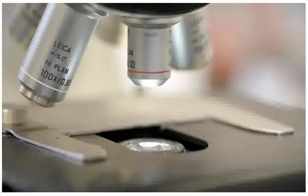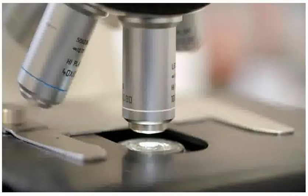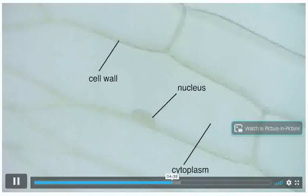To see more clearly, the magnification is increased by selecting another objective lens. The stage should be moved down before changing the lens. Can you identify the structures? It is possible to see the nucleus, cell wall and the cytoplasm.